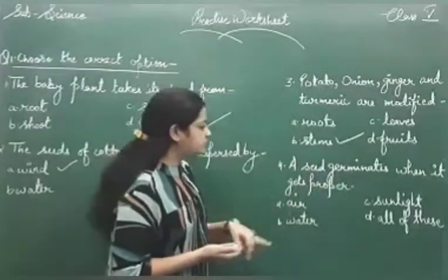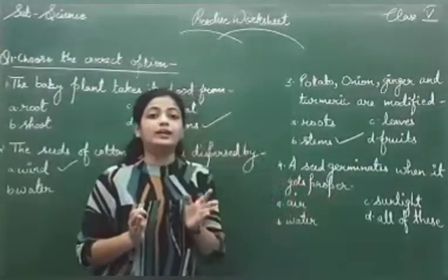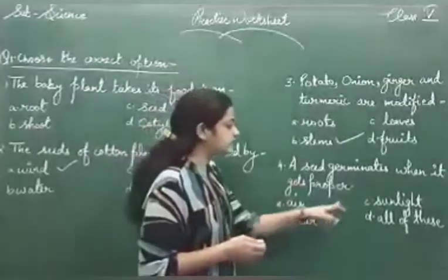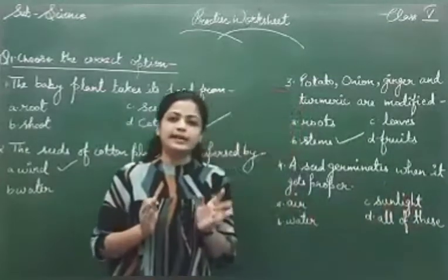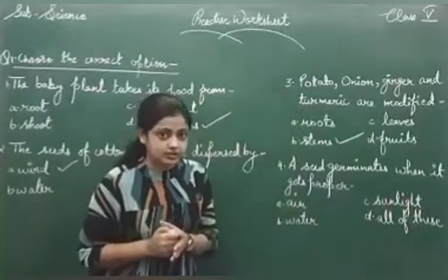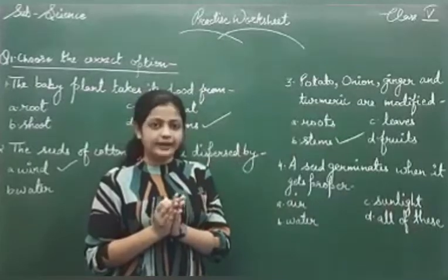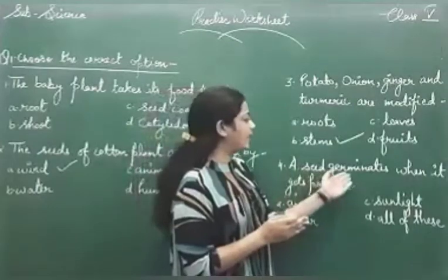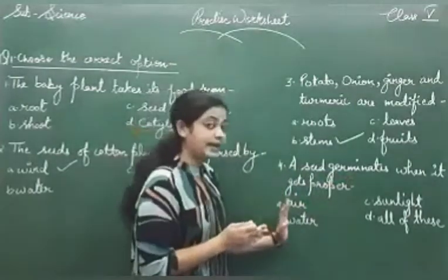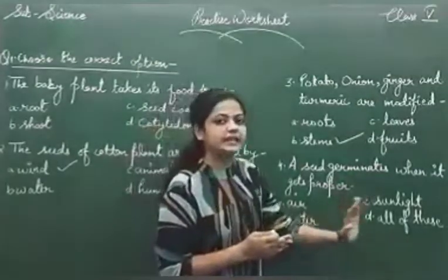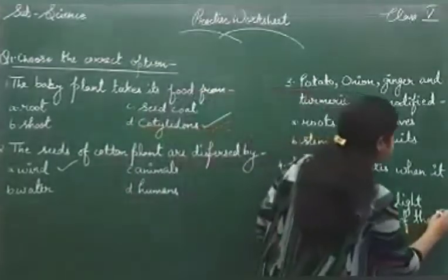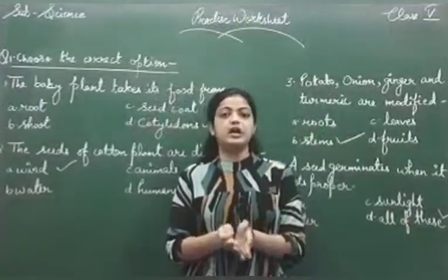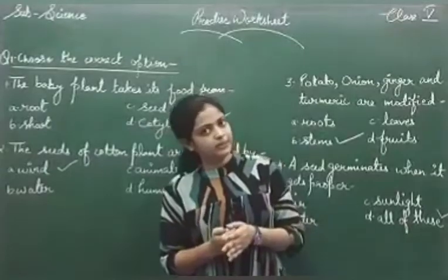A seed germinates when it gets proper — air, water, sunlight, or all of these? For germination, what conditions are required? You read about germination in the chapter, and I explained it with diagrams as well. Seeds require air, water, and sunlight. So the correct answer is all of these. I will be giving you a few more questions in the form of a practice worksheet which will help you out for your periodic test. Thank you.